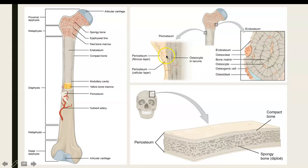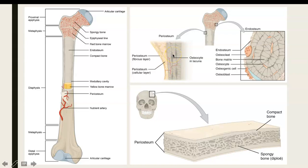Once you get into the compact bone, you also have these little lacunae — those are small spaces within the bone. Those little hollow spaces are filled with a cell referred to as the osteocyte. So these are osteocytes living in those little lacunae within the bone. In the next video, we're going to look very carefully at compact bone and how it's constructed.